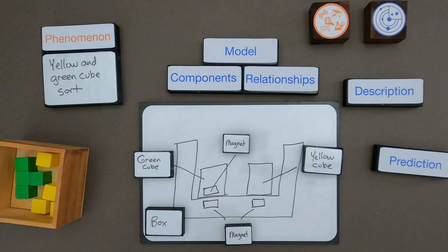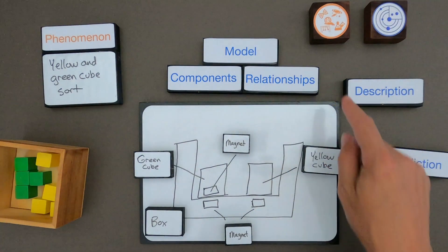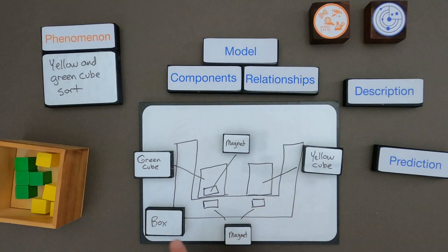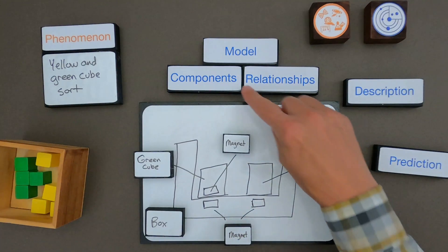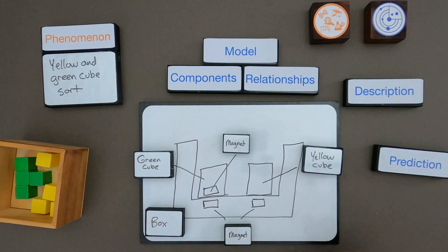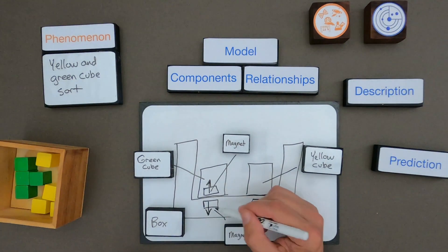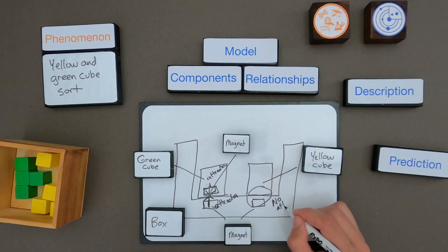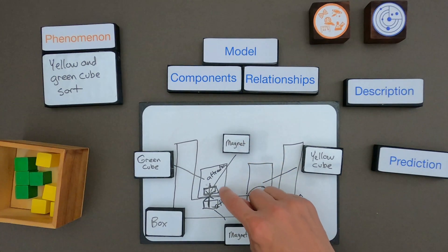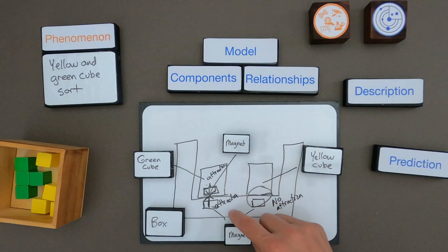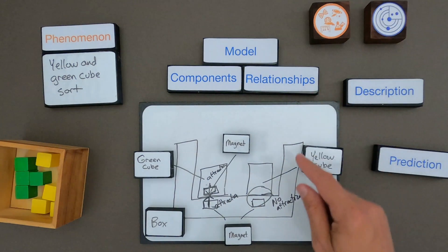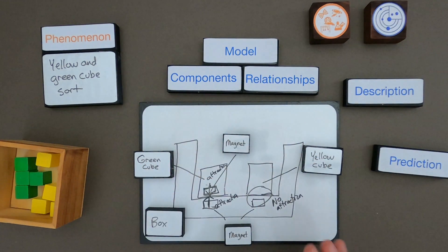In my model I've shown the components: the yellow cube doesn't have a magnet in it, the green cube does have a magnet in it, and I think in the box there are magnets hidden in the bottom. Now I want to draw the relationships. The magnet in the green cube is attracted to the magnet in the box. Between the yellow cube and the box there's no attraction. When looking at relationships you're just thinking through how all parts of the model relate to one another.